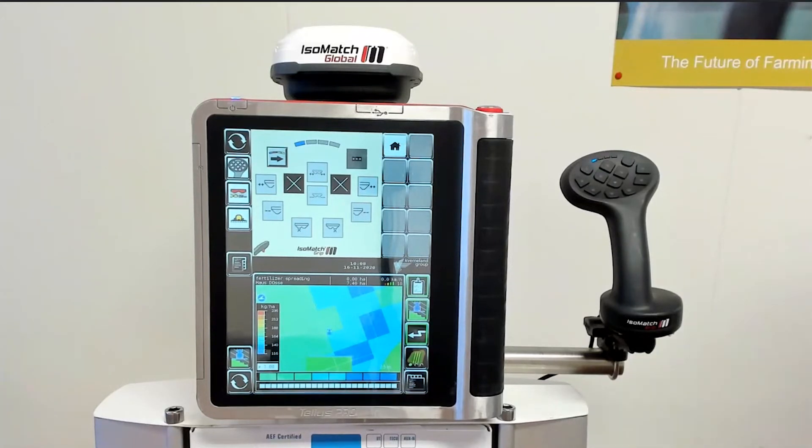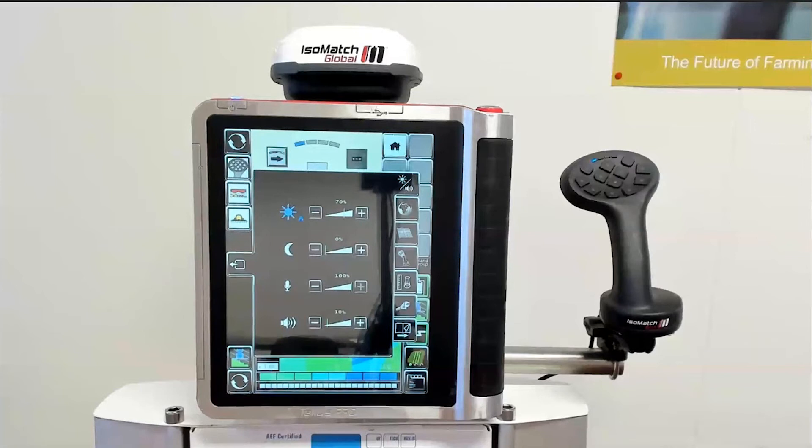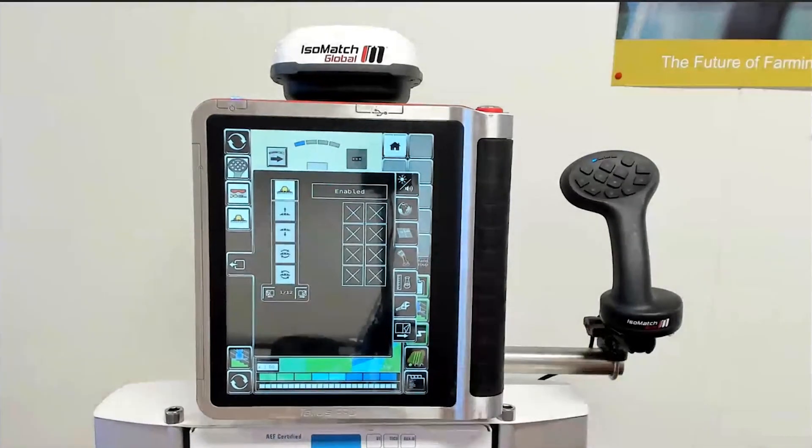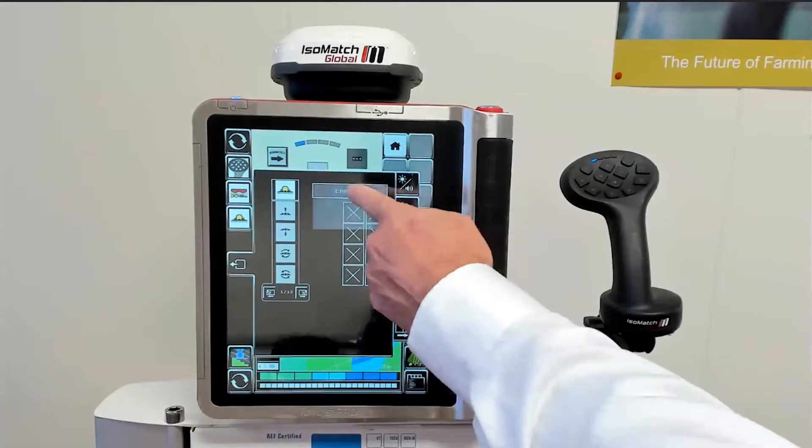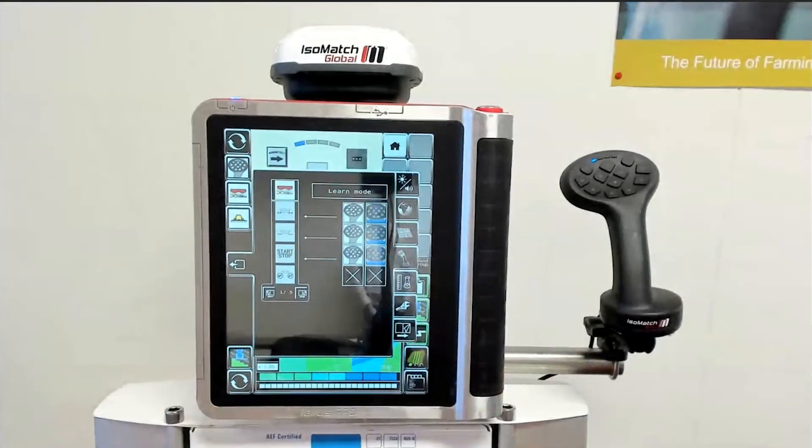The functions of the machine are allocated to the buttons in a programming mode on the terminal, in our case, the IsoMatch Tellus terminals. This programming mode can be found on the terminal by pushing the main menu button, and then the button with a joystick icon. The fastest way to program is by switching to learn mode. And here we can see the buttons which already have an assigned program.